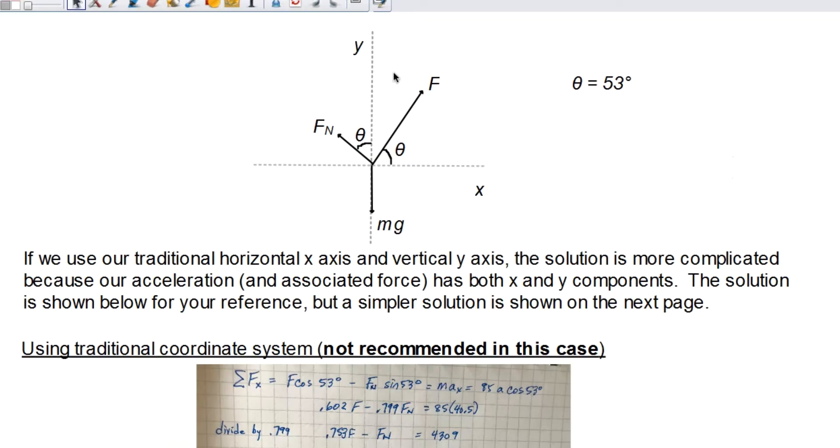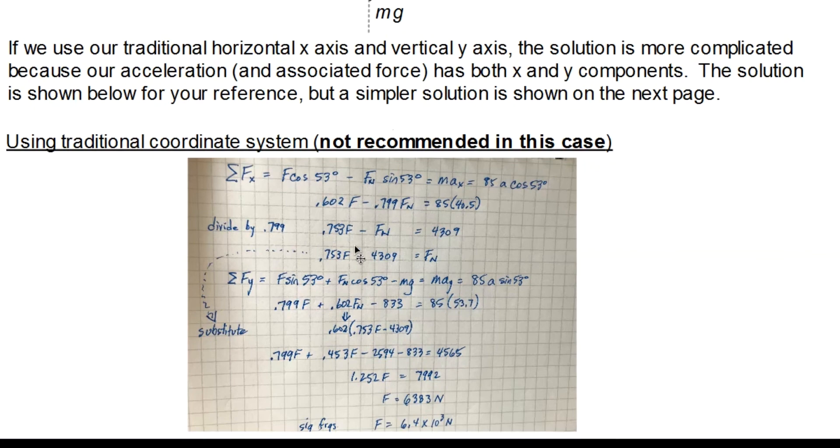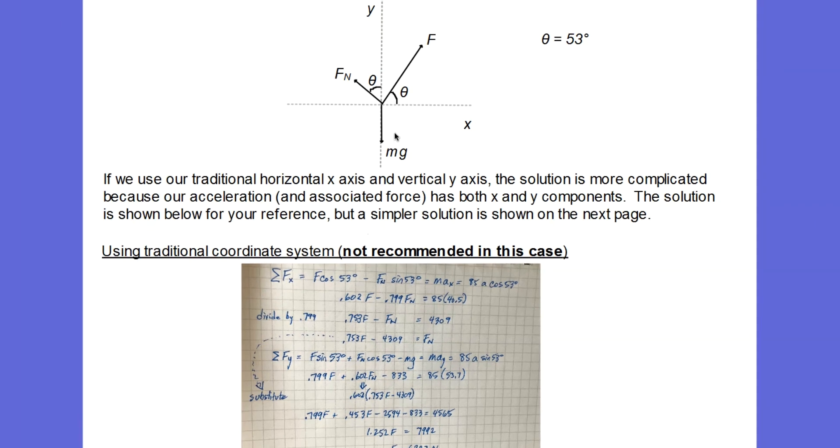So here I've drawn a force diagram with our traditional coordinate system with x-axis being horizontal and y-axis being vertical. So here's the force from the cannon tilted up at an angle of 53 degrees. The normal force, of course, is perpendicular to the cannon surface. So that's drawn perpendicular to the 53 degree direction. And then weight, of course, is always vertically straight down. So if I want to solve this with my traditional coordinate system, I show it here, but I'm not going to go through it because this is not the recommended way to do it. You can see here how much work is involved using my traditional coordinate system.